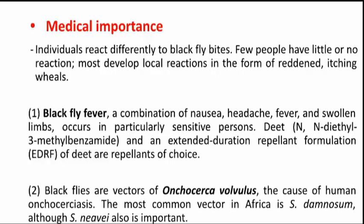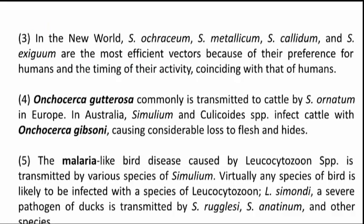Number 2: Black flies are vectors of Onchocerca volvulus, the cause of human onchocerciasis. Number 3: In the New World, Simulium metallicum and Simulium exiguum are the most efficient vectors because of their preference for humans and the timing of their activity. Number 4: Onchocerca gutturosa is commonly transmitted to cattle by Simulium ornatum in Europe. In Australia, Simulium and Culicoides species infect cattle with Onchocerca gibsoni, causing loss of flesh and damage to the hides.